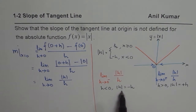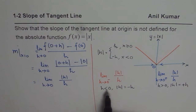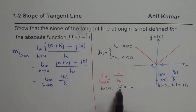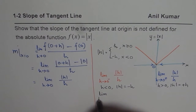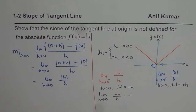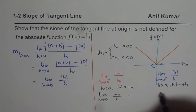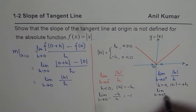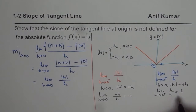Using this definition of the absolute function, when we approach from the left side, |h| = −h, so we write: limit as h → 0⁻ of −h/h = −1. On the other hand, when approaching from the positive side, |h| = +h, so: limit as h → 0⁺ of +h/h = +1.